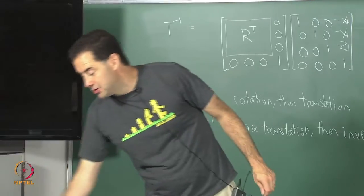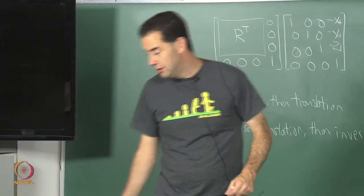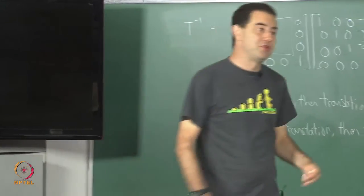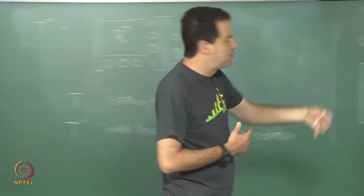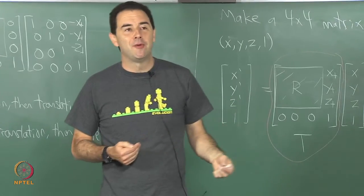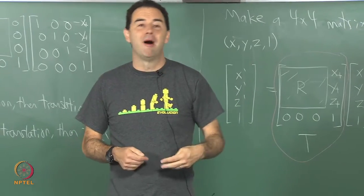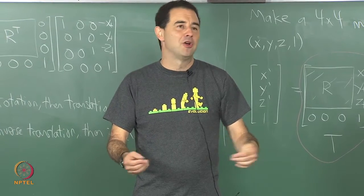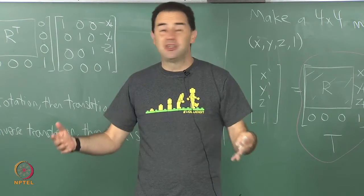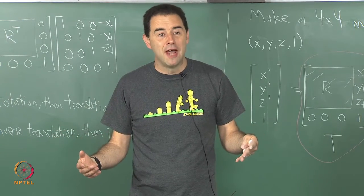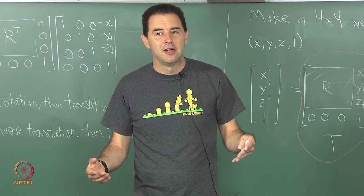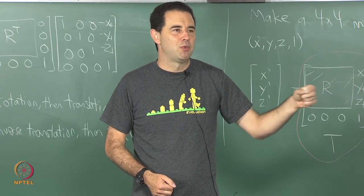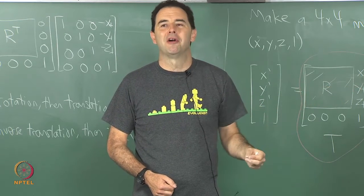The next part of transformations I want to get to is called viewing transformations. I want to build up enough transformations so that we can place our models into the world and also define the stationary part of the model in the world, then figure out how it should look on the screen based on which way we are looking with our eyes.